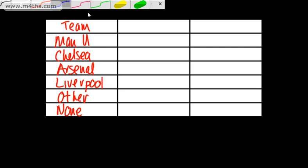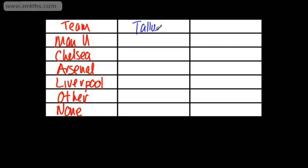In the next column we would have the tally. We use this section when we're carrying out the questionnaire — so when we're collecting data or counting cars going by, this is the column we would use. So if I ask the first person which their favourite team is and they say Chelsea, I would put a mark in like so. The next person might say Liverpool, the next might say 'other', and the next Man United, and so on.